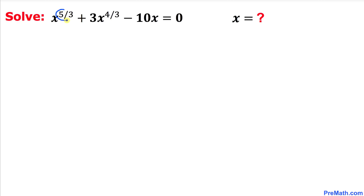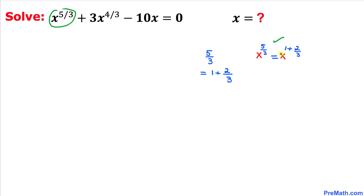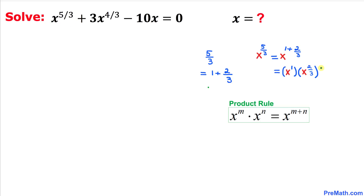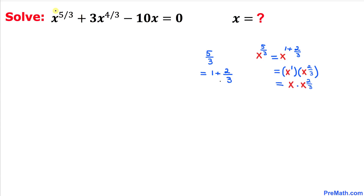Let's focus on the exponent 5 over 3. Here I have copied down this fraction 5 divided by 3, and this could be written as 1 plus 2 divided by 3. So x to the power 5 over 3 can be written as x to the power 1 plus 2/3, which by the product rule becomes x times x to the power 2/3.